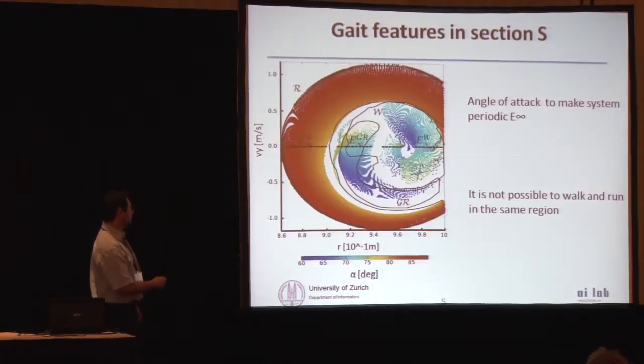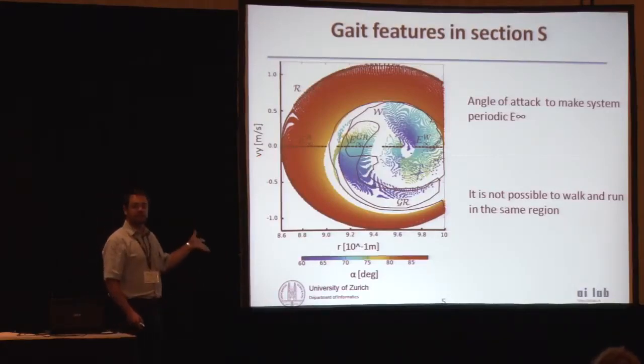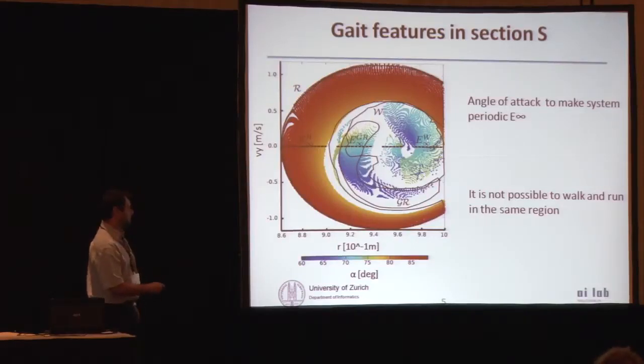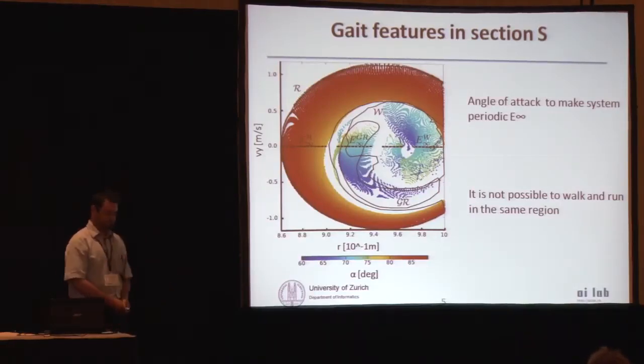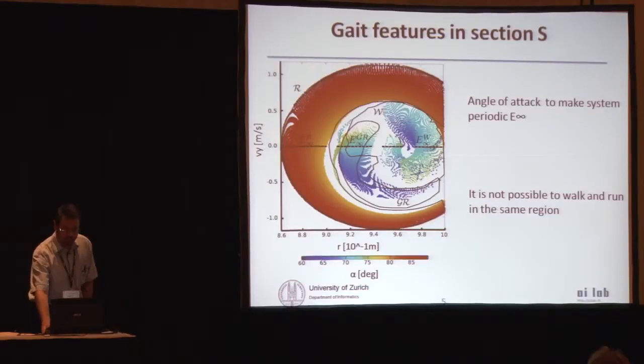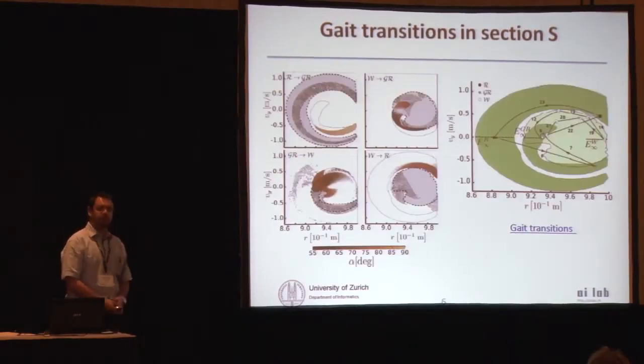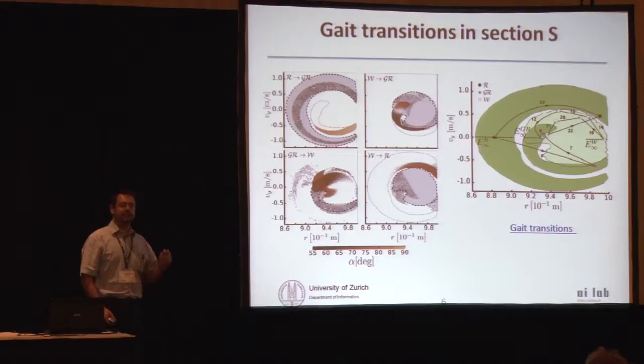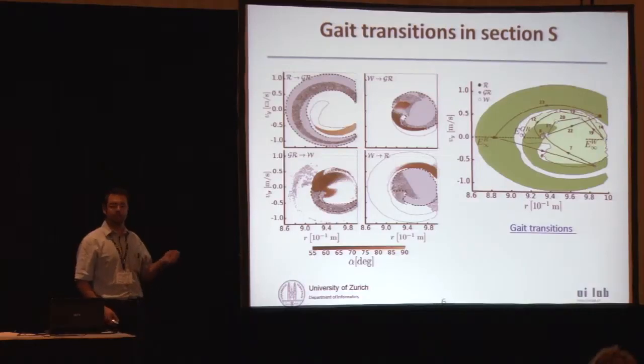What is nice is that here in the Y0, you can have the symmetric gait. And the message here is that in most of the initial conditions that you can imagine, you can find an angle of attack that is going to map the system again in the symmetric gait. We can also look at the initial conditions that can bring the system from running to walking or from walking to running.